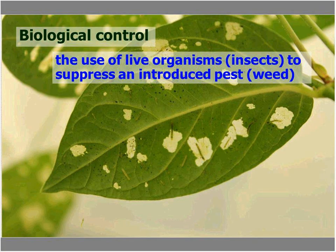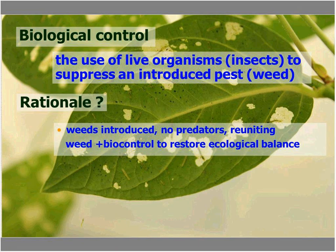What is biological control? In our case, we're talking about the use of live organisms — insects — to suppress introduced pests or weeds. The rationale is that these invasive plants are introduced from somewhere else, in this case Europe, and they have no natural predators. What we're trying to do is reunite the weed with its biocontrol agent and restore some sort of ecological balance between them.